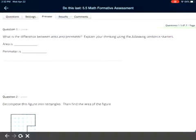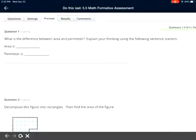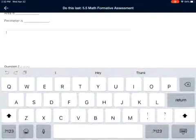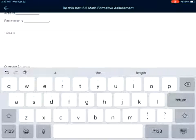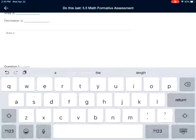For the first question, it says what is the difference between area and perimeter? Explain your thinking using the following sentence starters. In this box you're going to write 'area is,' and I want you to explain in your best words what is area. You can explain how do you figure out area. If you look at a shape like a rectangle, which part of the rectangle is the area?